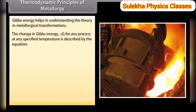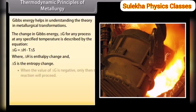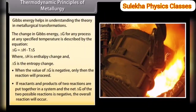The change in Gibbs energy ΔG for any process at any specified temperature is described by the equation: ΔG = ΔH − TΔS, where ΔH is the enthalpy change and ΔS is the entropy change. When the value of ΔG is negative, only then will the reaction proceed. If the net ΔG of two possible reactions is negative, the overall reaction will occur.